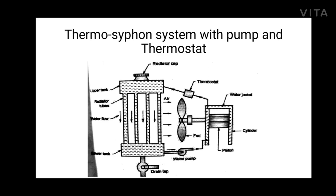The diagram shows a thermosiphon system of water cooling with a pump and a thermostat. The cold water from the lower tank of the radiator is pumped to the water jacket of the cylinder. The heated water from the cylinder is passed to the upper tank of the radiator with the thermostat installed in between, which controls the temperature of water. Hot water flows down the radiator tube under gravity to the lower tank, transferring heat to incoming air drawn by the fan mounted on the engine and driven by belt. Radiator tubes are made of copper and brass because of their high thermal conductivity.